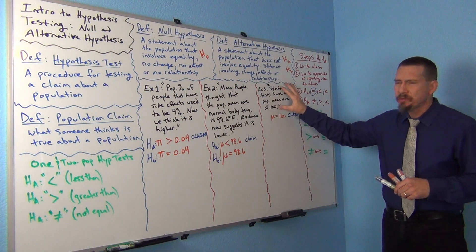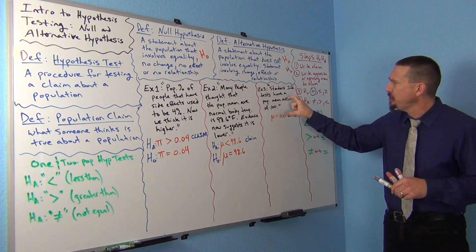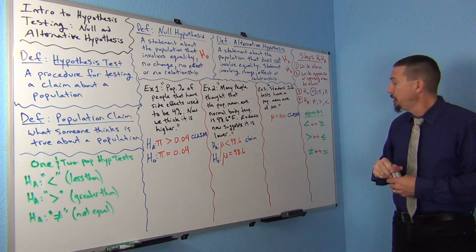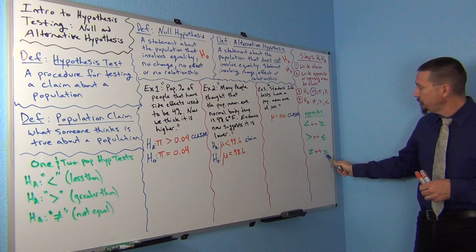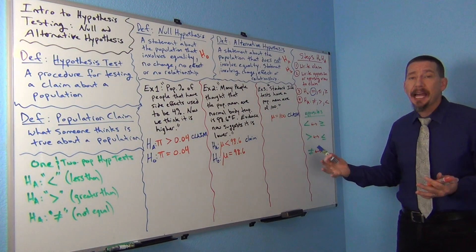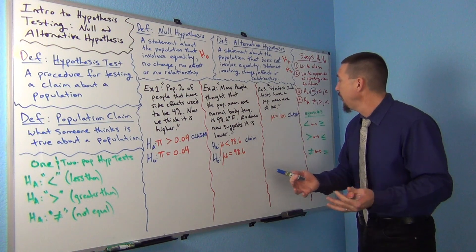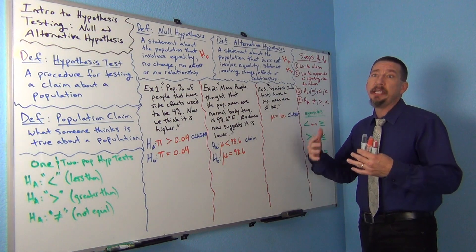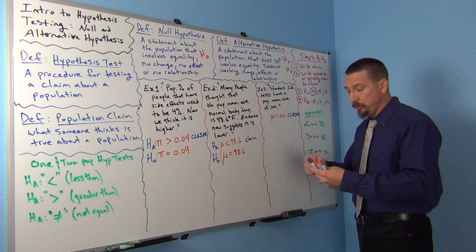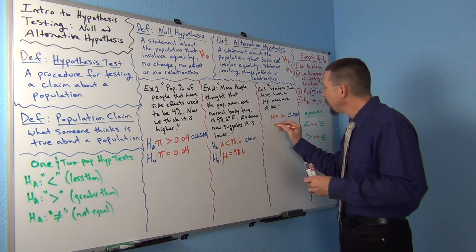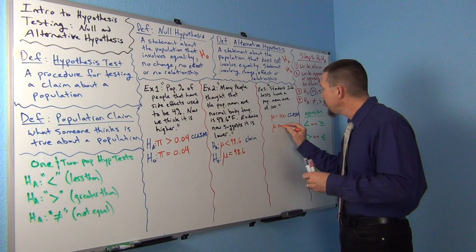If this claim was false — if what the article said about IQ tests was false — what would be true? Well, the opposite of equal to is actually not equal to. So this is very classic: if you ever get an equal to claim, the opposite would be different or not equal to. So we're going to write the opposing view as not equal to 100.